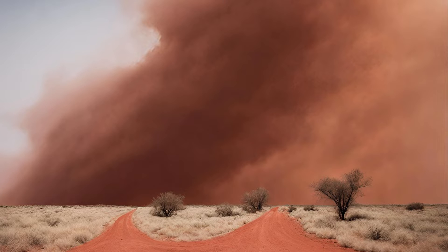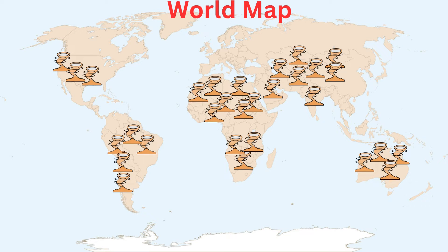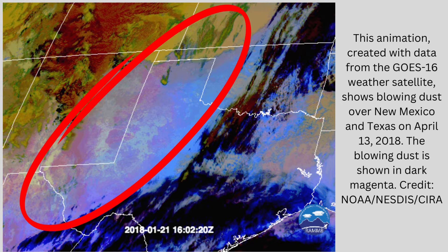Dust from big dust storms can travel around the world — it can even reach places far, far away from where the storm started. Dust storms can occur in many places around the world, but they're most common in dry and dusty areas like deserts, such as the Sahara Desert in Africa, the Gobi Desert in Asia, and the Mojave Desert in North America. You can see by the markers on the world map where dust storms can occur. Look at this satellite image of a dust storm detected on NOAA weather radar from a large dust storm that spread across parts of New Mexico and Texas in 2018, spreading out over several hundred miles.